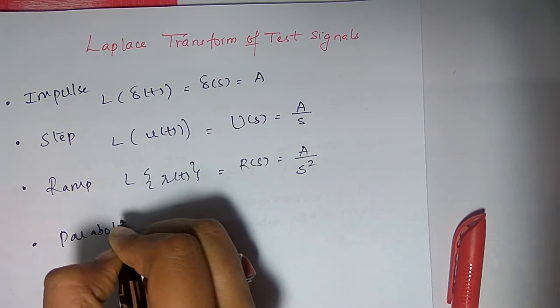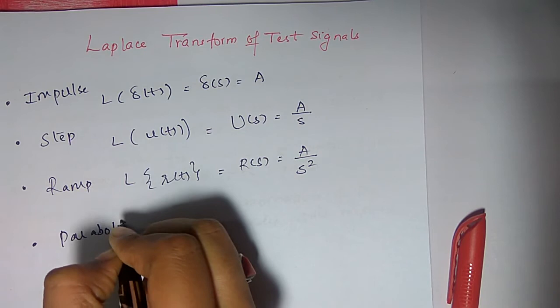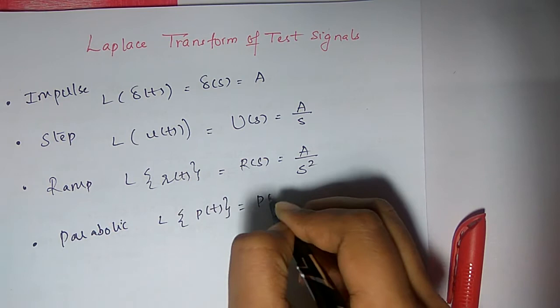Next is parabolic. Laplace of p of t is equals to p of s is equals to a by s cube.